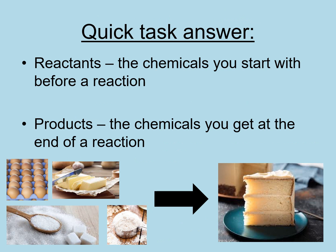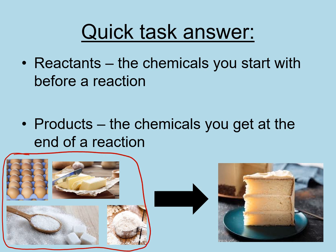Okay, here's the answer to the quick task. The reactants are the chemicals you start with before a reaction. So before a chemical reaction takes place, you start off with reactants. The example I've put at the bottom of this screen — these are your reactants — it's an example of a cake. So if you've got flour, sugar, eggs, and butter, that's what you're starting off with. The products are the chemicals that you get at the end of a reaction. In this example, the product is a cake.